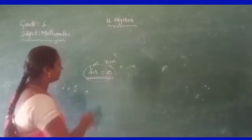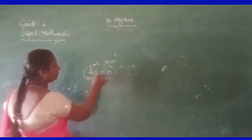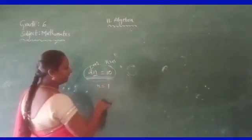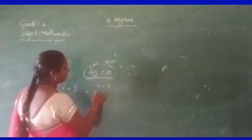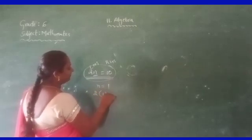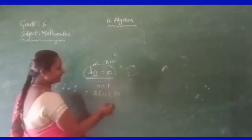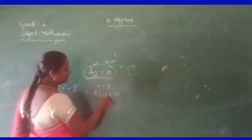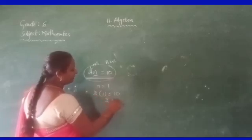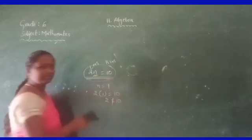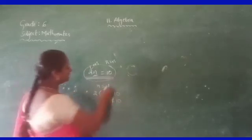So which variable? Suppose if you take n value is 1, then are both the left hand side and right hand side equal? No. 2 times 1 is 2, and 2 is not equal to 10.